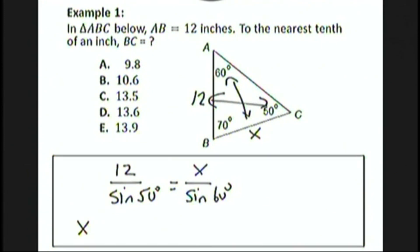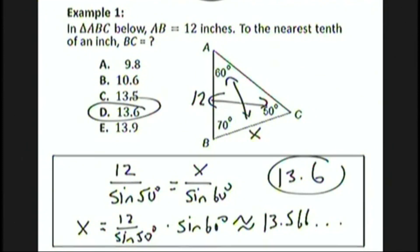So x equals 12 over sine 50 degrees times sine 60 degrees. Just put this into your calculator and you'll get approximately 13.566. To the nearest tenth, that's 13.6, which is choice D.